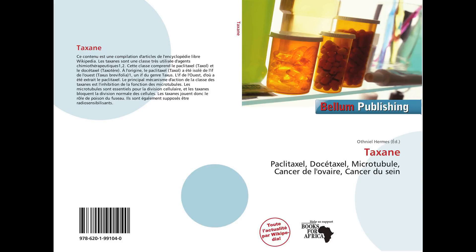Ring D is an oxetane ring fused to ring C. Two key chemical transformations are the Shapiro reaction and the pinacol coupling reaction. The overall synthesis was published in 1995 in a series of four papers in the Journal of the American Chemical Society.